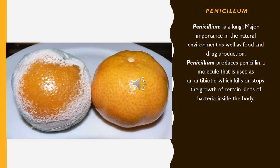Penicillium is a fungus of major importance in the natural environment, as well as in food and drug production. Penicillin, a molecule produced by Penicillium, is used as an antibiotic which kills or stops the growth of certain kinds of bacteria inside the body.